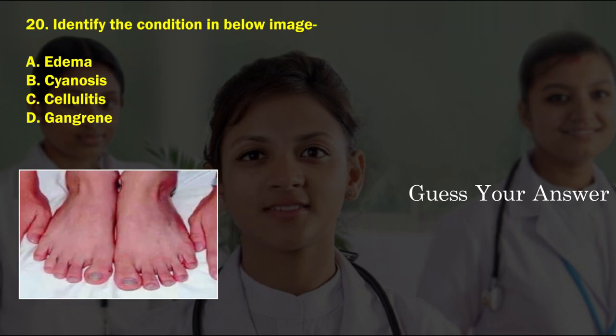Identify the condition in the below image. Option A: edema, option B: cyanosis, option C: cellulitis, option D: gangrene. The correct answer is option C, cellulitis.